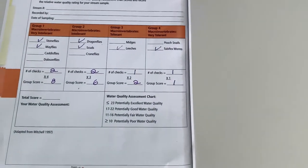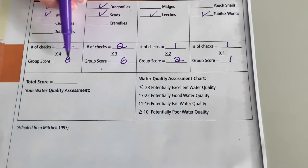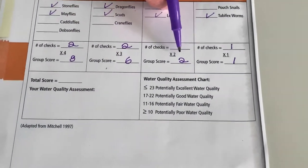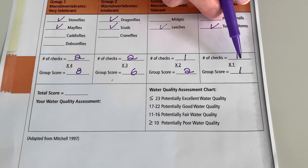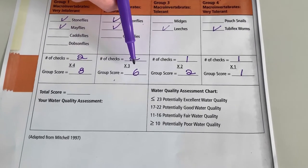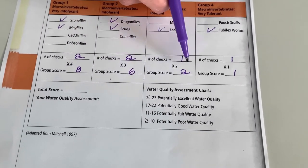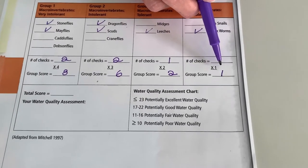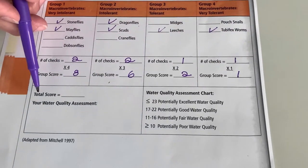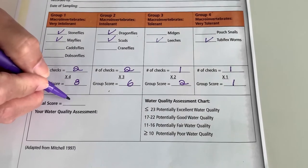Then we're going to add the numbers across the bottom. The 8, the 6, the 2, and the 1. So 8 and 6 is 14. Plus 2 is 16. Plus 1 is 17. So we'll put our total score here. 17.